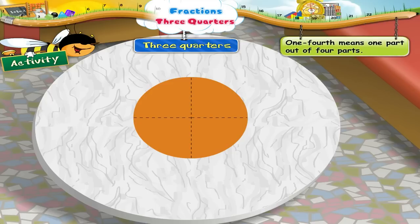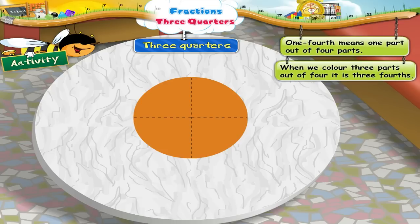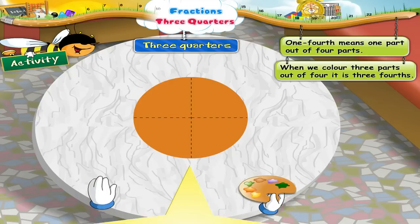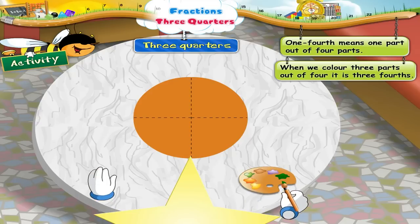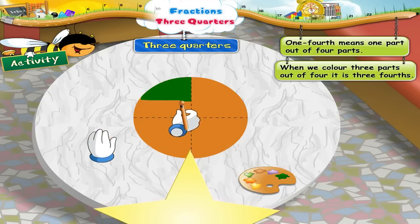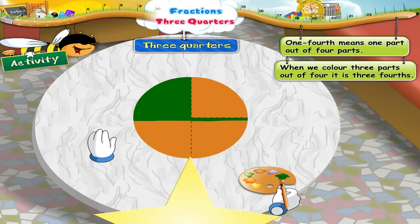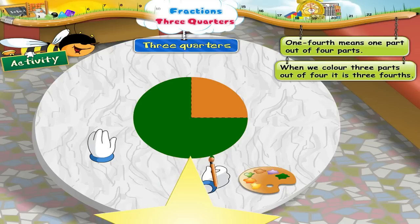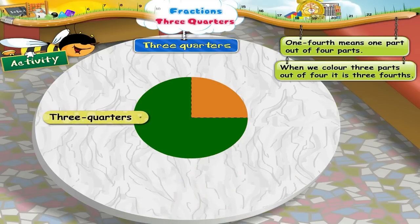One-fourth means one part out of four parts. Can we colour it? When we colour three parts out of four, we call it three-fourths. As there are three-quarter pieces coloured here, we also call it three-quarters.